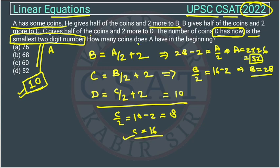What are they asking? How many coins does A have in the beginning? So A is having 52 coins. The answer is option D. The main trick in this question is this one. If you can understand this, you can solve this question very easily.